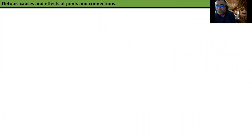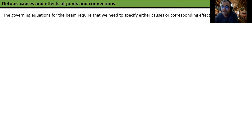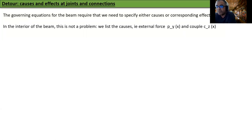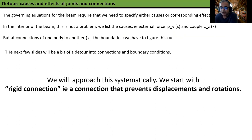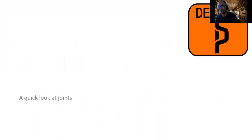We're going to take a detour now to talk about causes and effects at joints and connections. The governing equations require specifying either the cause or the corresponding effect on the beam. In the interior of the beam we simply list the causes, i.e., external forces py(x) and couples cz(x). But at connections of one body to another — i.e., at the boundaries — we have to figure this out carefully. The next few slides will be a detour into connections and boundary conditions, approaching this systematically starting with a rigid connection that prevents displacements and rotations completely.